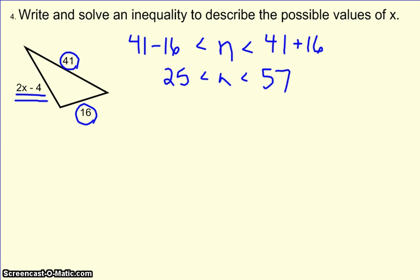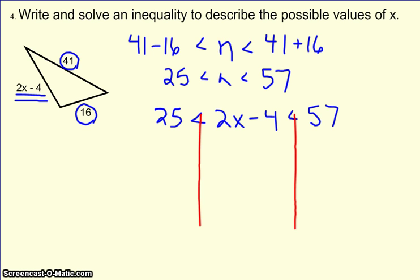All right, now I'm going to replace the n with the 2x minus 4. All right, so now I basically have a double fence problem to solve. So I need to get the x alone in the middle, so I'm going to add 4 to all three sides.